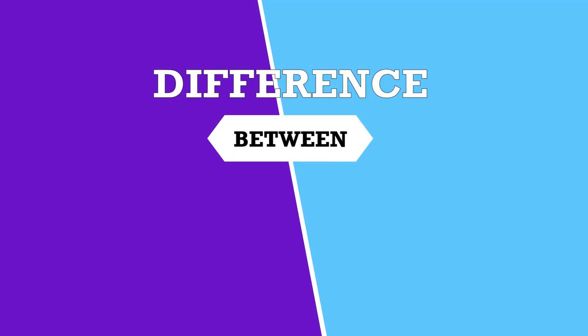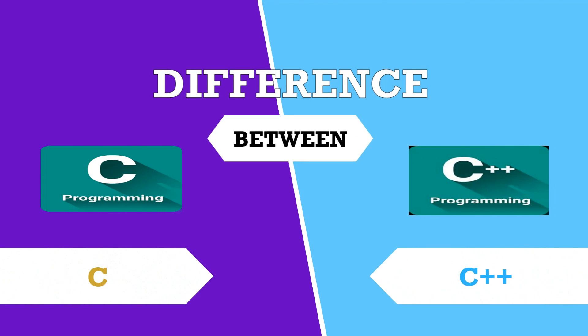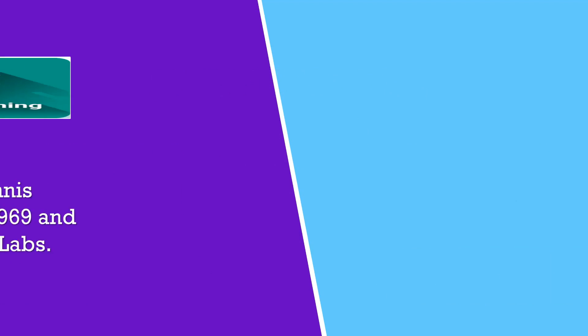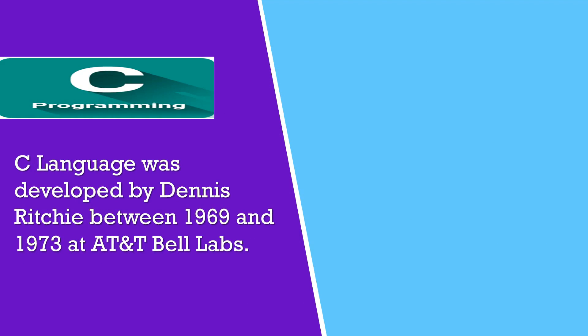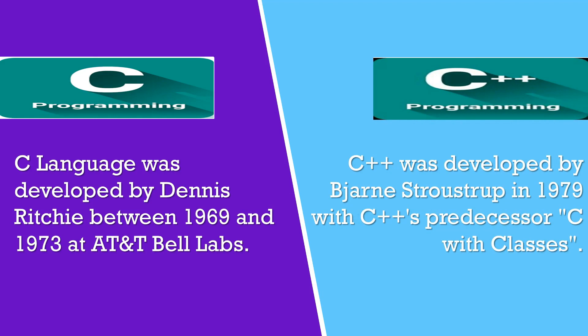Difference between C and C++. C language was developed by Dennis Ritchie between 1969 and 1973 at AT&T Bell Labs. C++ was developed by Bjarne Stroustrup in 1979 with C++'s predecessor C with classes.